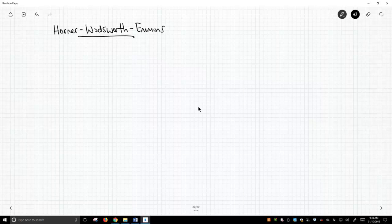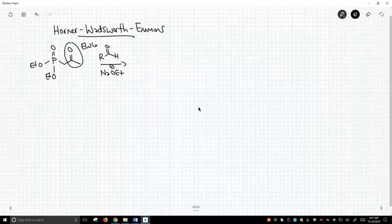The Horner-Wadsworth-Emmons begins with one of our phosphonate esters. This is a very simple one. Typically, in fact always in the Horner-Emmons reaction, this group is going to be an electron withdrawing group, and in this case it is. It's a carbonyl. What we do is we're going to take this and treat this with an aldehyde and some base. There are a lot of different bases that people use. Sodium ethoxide is really common, but there are many others.